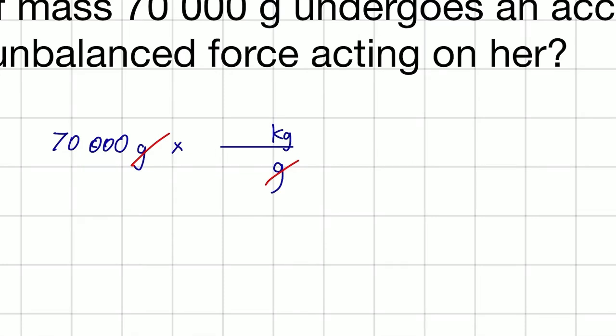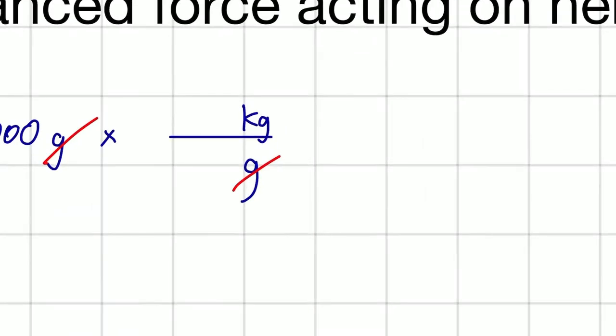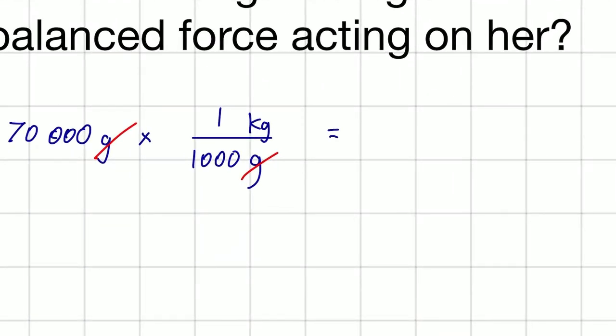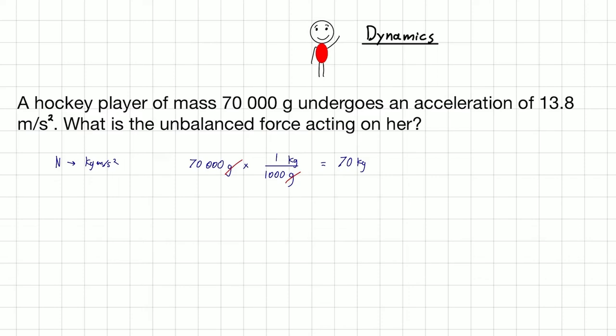How many grams are we going to put here? Well, in one kilogram, it's going to be 1,000 grams. So let's do this here. 70,000 divided by 1,000 equals 70. And the units left is kilograms. So 70 kilograms, that's going to be our mass.